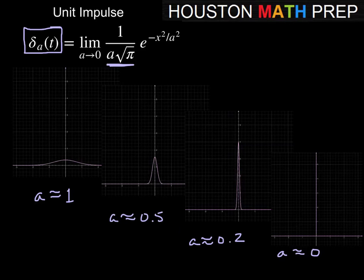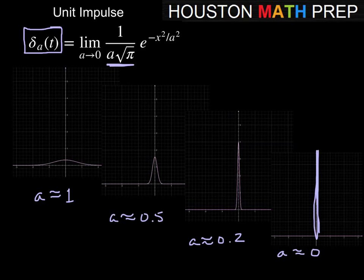This function kind of looks like a probability function. As A approaches 0, the function is basically defined as 0 everywhere except when T equals 0, where we get an infinite spike on the vertical axis. So we get an infinite spike at zero and the function is essentially 0 everywhere else — that's what happens as A approaches 0.